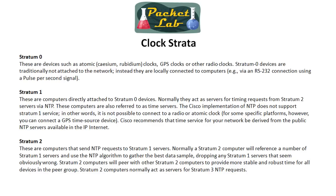We'll take a look at how to find public NTP servers a little later on. Stratum two gets its time from stratum one, and stratum three from stratum two — pretty straightforward. One quick aside: while Cisco doesn't officially support stratum one service, we'll see later how to set up a Cisco router as an authoritative time source. You don't want to do that unless you have no access to a public NTP server. And when you do, don't set it to stratum one — that's basically lying about the quality of the clock source.